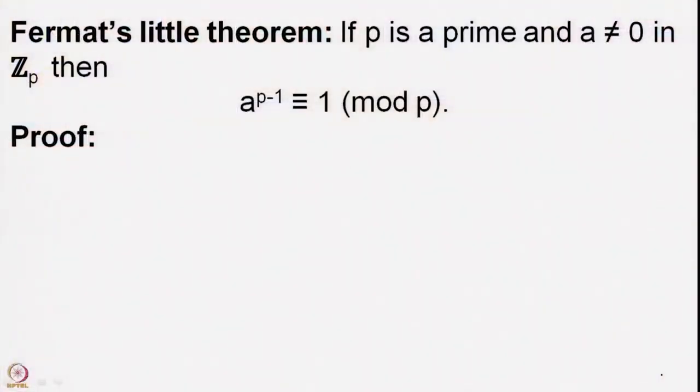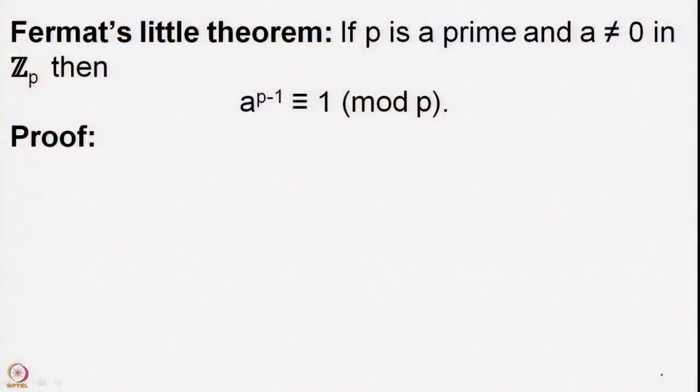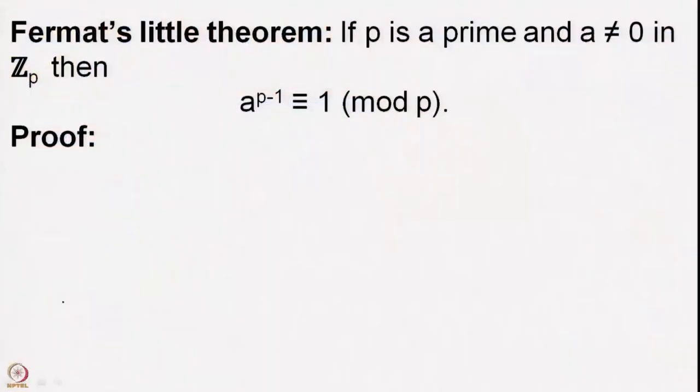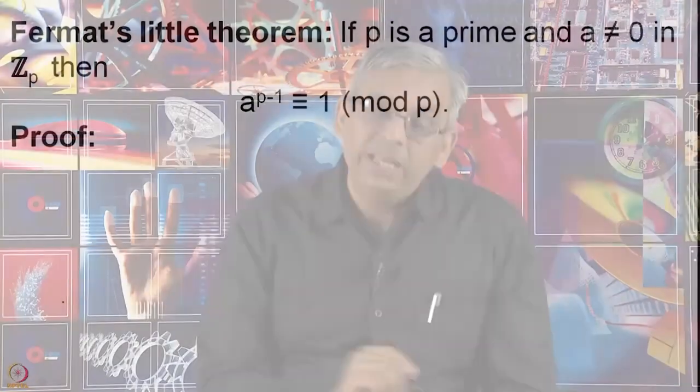Right now I will prove one small result called Fermat's Little Theorem, also abbreviated FLT — but this is not the famous Fermat's Last Theorem. Fermat's Little Theorem says: if you have any nonzero element in Z_p, then raising that element to the power p - 1 gives you 1. For any prime p and any nonzero number, raising it to the power p - 1 gives exactly 1 — a very remarkable fact.